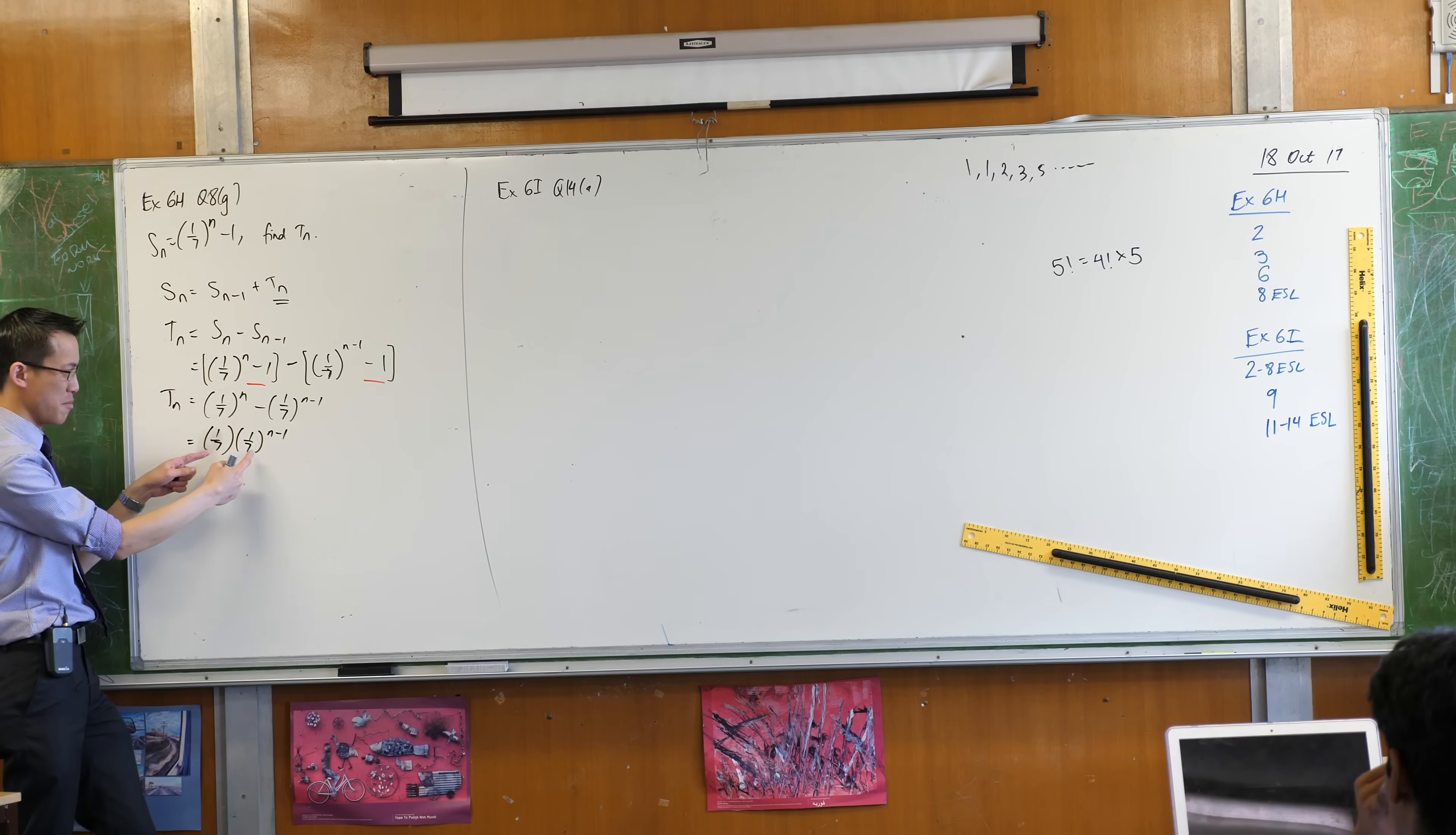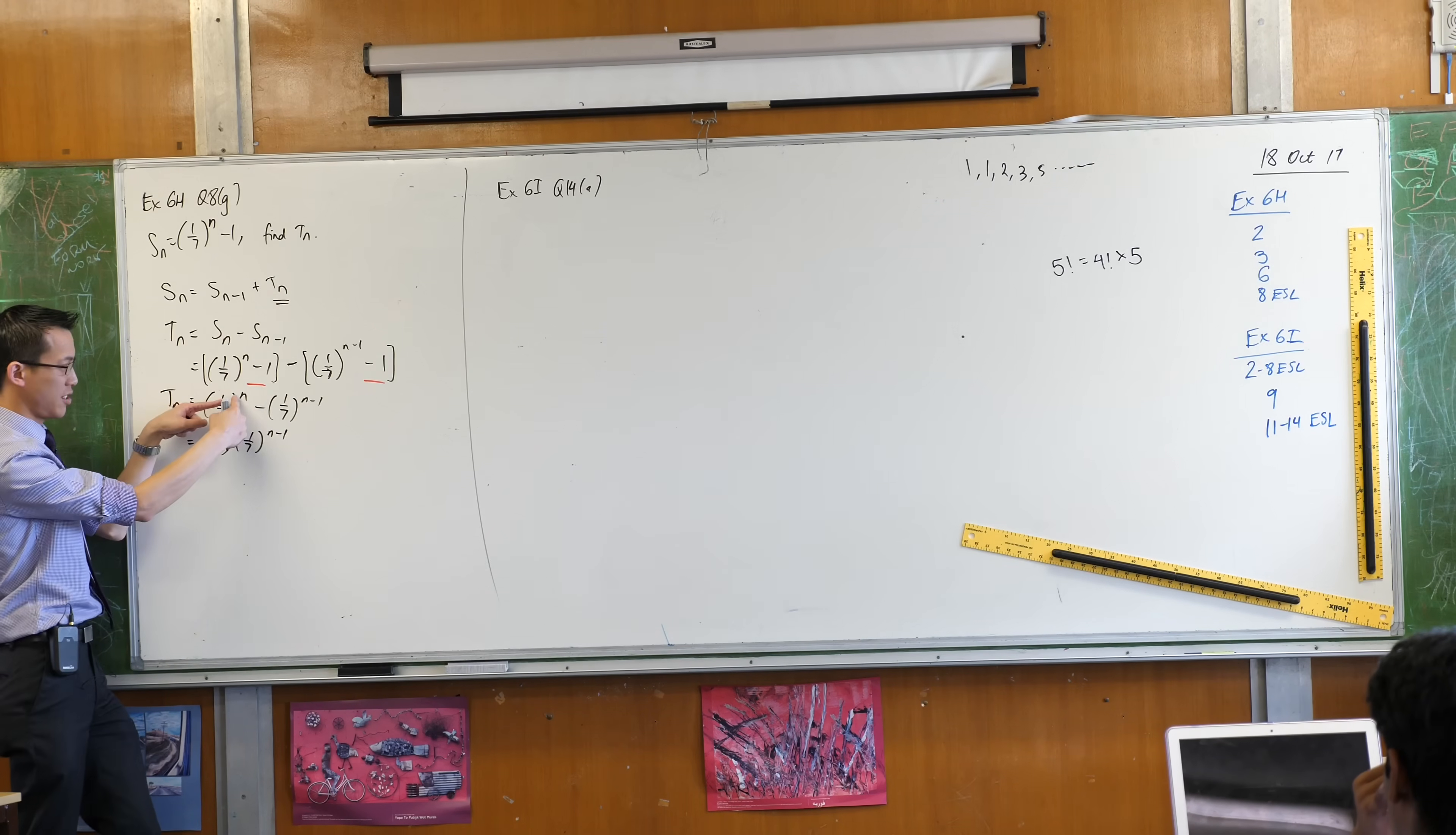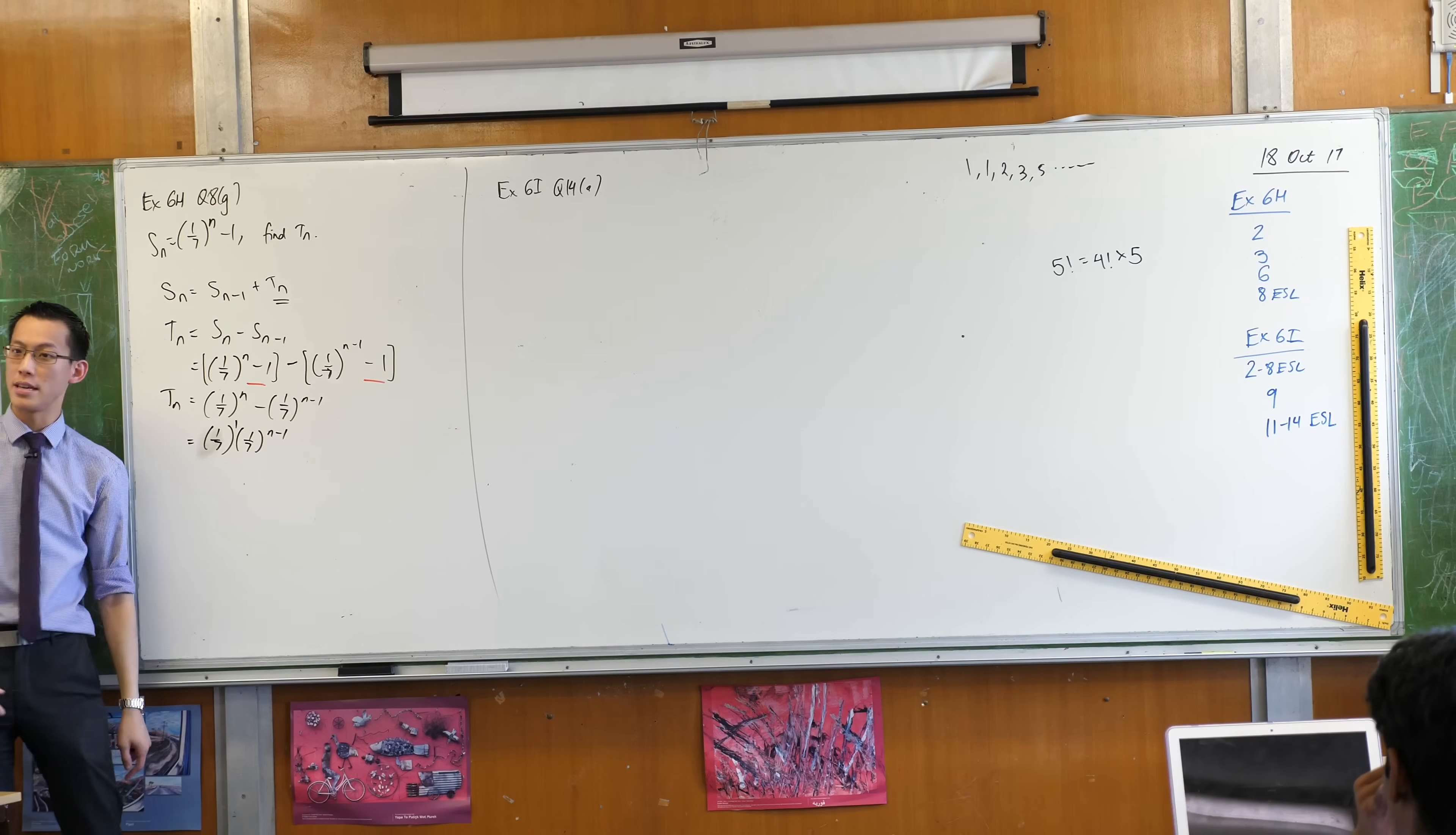From index laws, I can go from this to this. I'm used to going in the other direction. When you multiply numbers, you add their indices, but if I can do that, I can just as easily break this apart into two pieces. Do you agree?